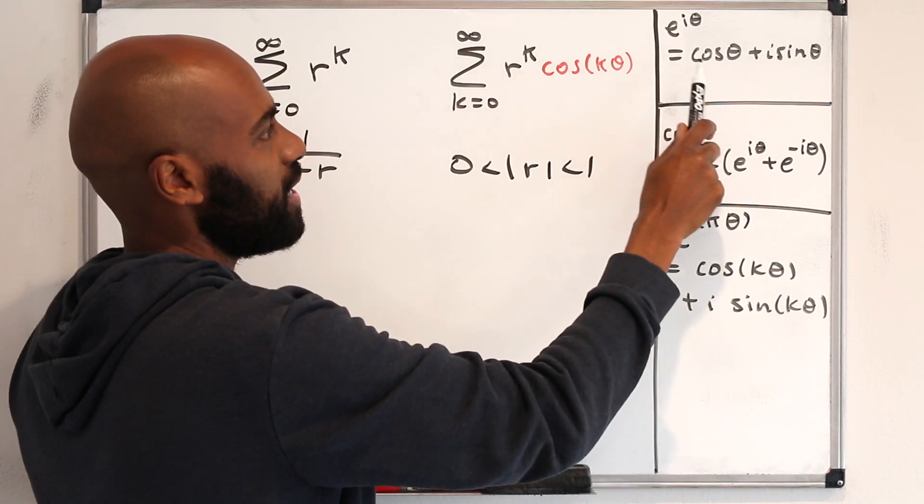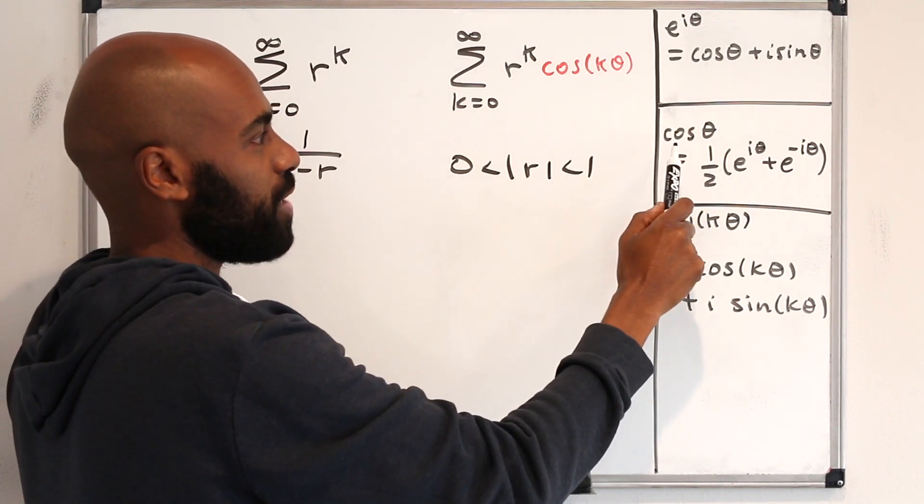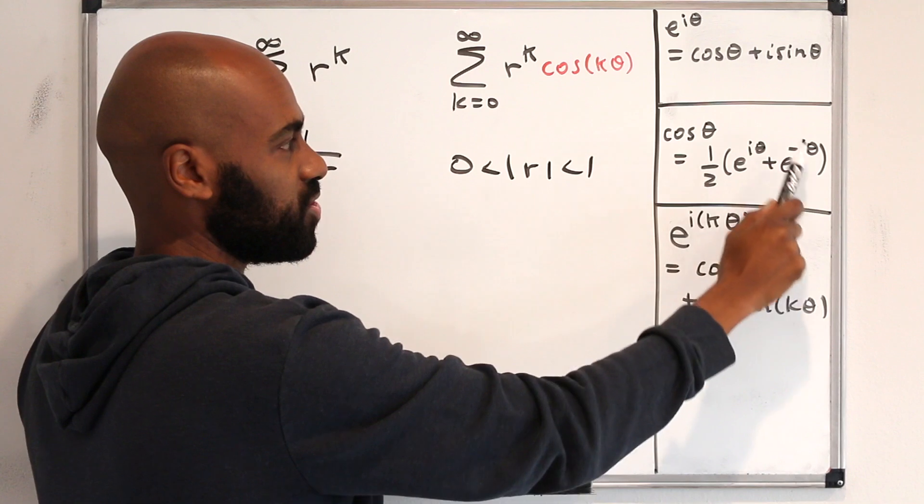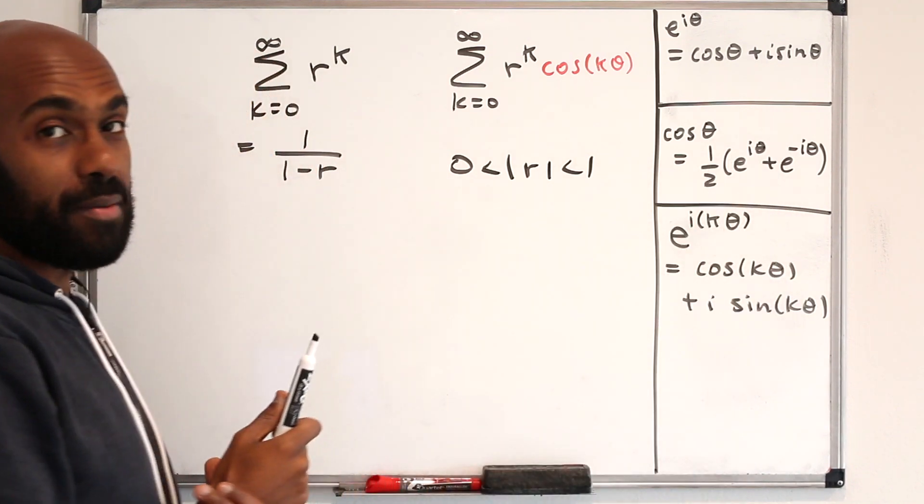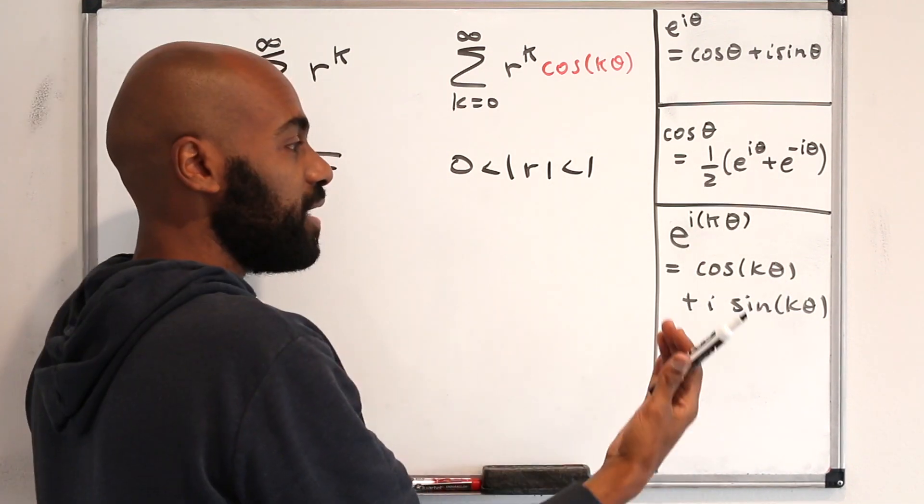By doing this for e to the negative i theta, you can actually write cosine theta as this complex number right over here, and that might be useful in the process. And finally,